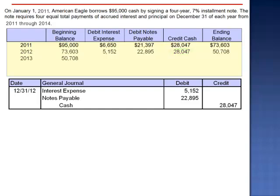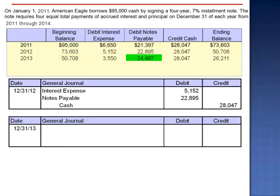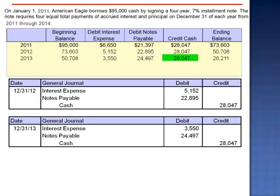For 2013, the beginning balance is $50,708 multiplied by 7%, giving interest expense of $3,550. The credit to cash is $28,047, so the reduction in principal is the difference, $24,497. This brings the loan balance at the end of 2013 down to $26,211 — $50,708 minus $24,497. The journal entry is a debit to interest expense $3,550, debit notes payable $24,497, and credit cash $28,047.